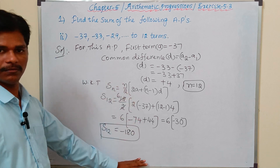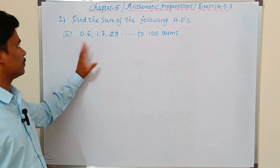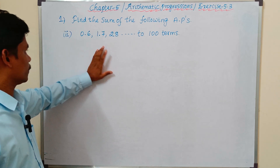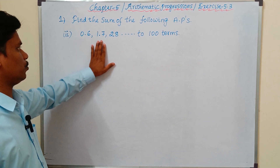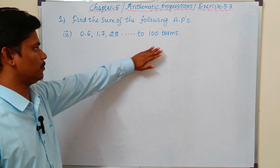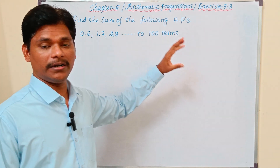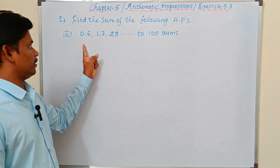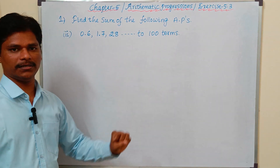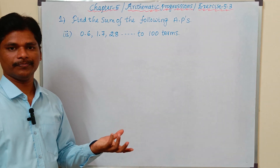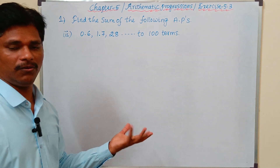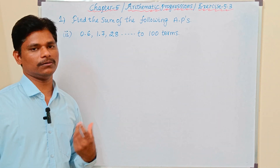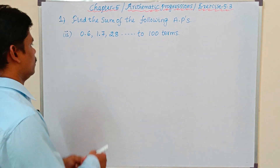The third question: 0.6, 1.7, 2.8, and so on, up to 100 terms. Here the decimal points — how to do this one? Same formula: Sn = n/2 × (2a + (n−1)×d).